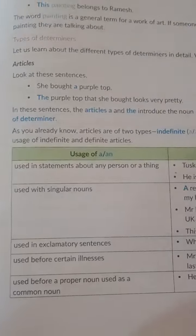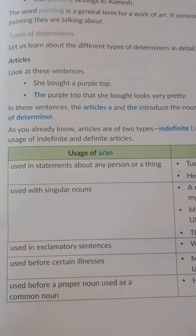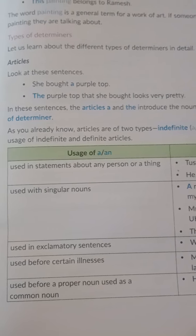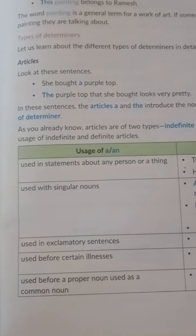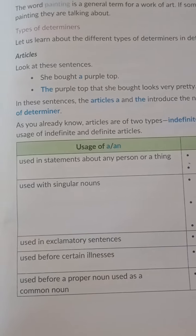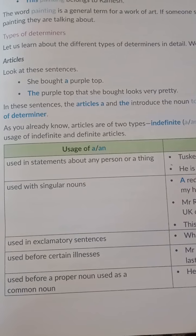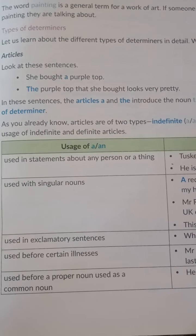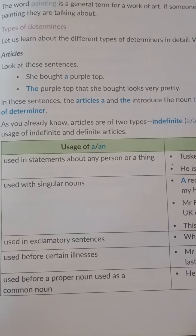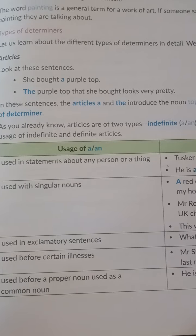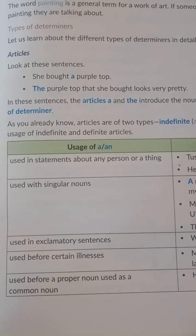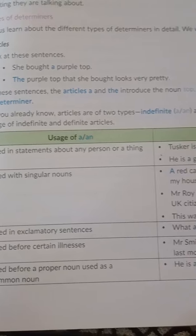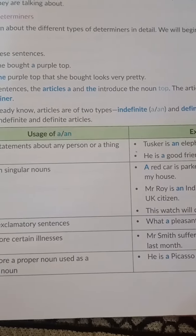First of all let us see the type of determiners — articles. We all know what is the function of an article. The function of an article is to identify a noun or indicate a noun. A, an, and the — these are the three articles that help us indicate a noun. We can divide articles into two parts: indefinite and definite.